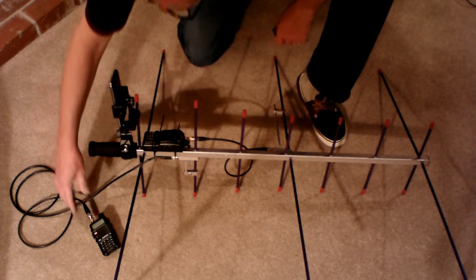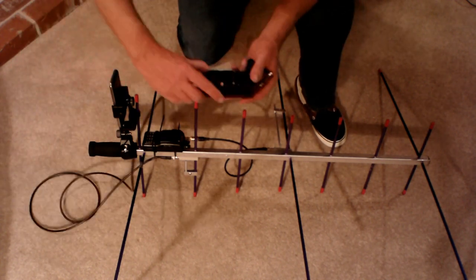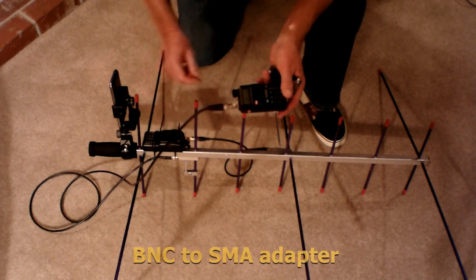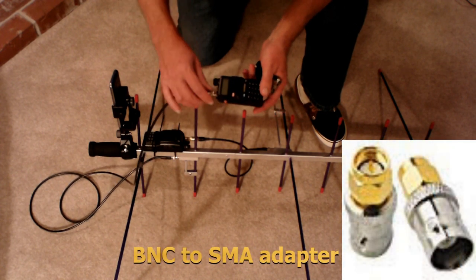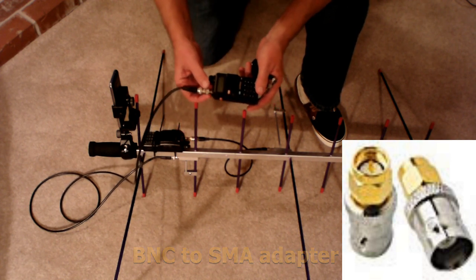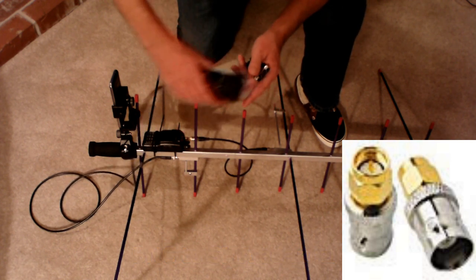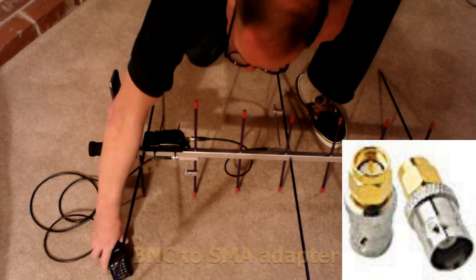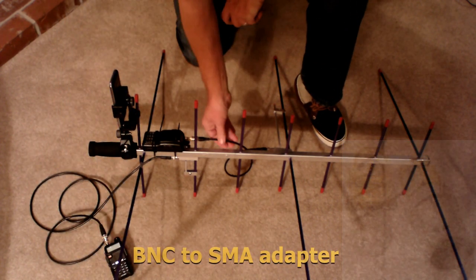I also want to point out on these radios that you have adapters. The Arrow uses a BNC connector, and as you can see, you've got SMA connectors on the radios. So you have to have an adapter. And again, we have those in the comments section.